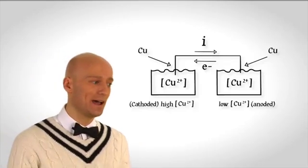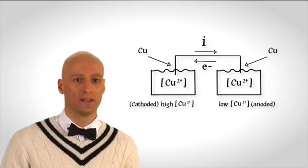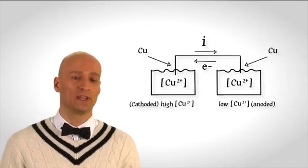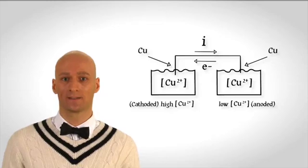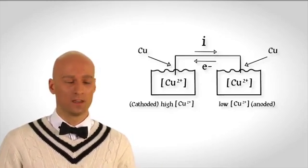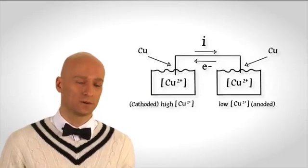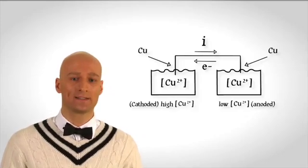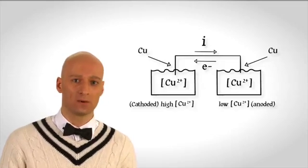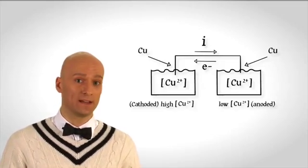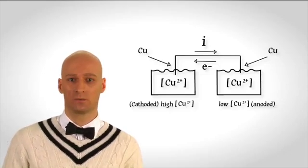On the left side, we have a high concentration of copper ions. On the right side, we have a low concentration. The electrons will move in whichever direction allows those concentrations to become equal over time. Adding copper ions to the right side would raise its concentration, while removing copper ions from the left side would decrease that concentration, and eventually the two concentrations would become equal.